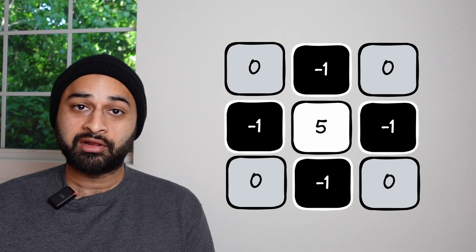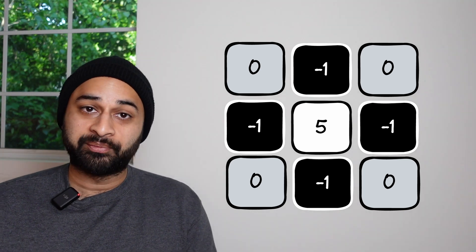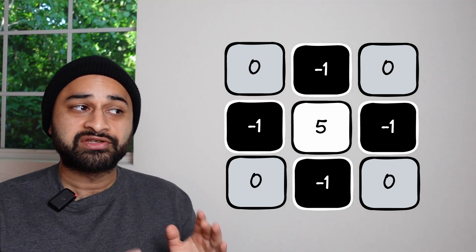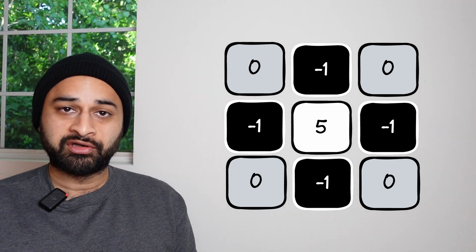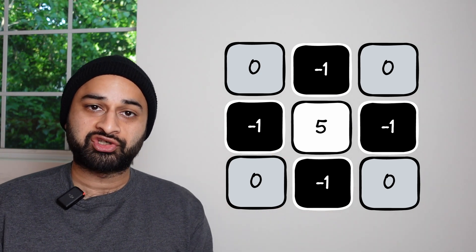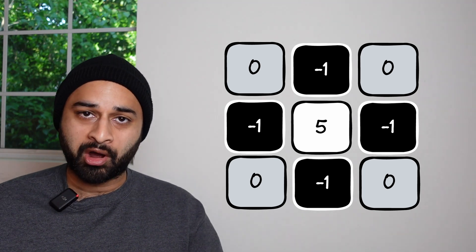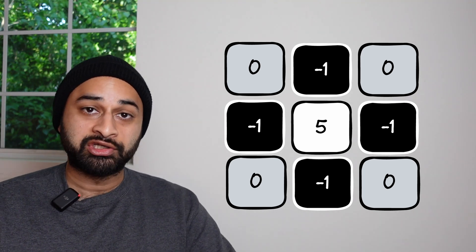Now the big question is: does this actually work? Let's set the sharpening factor to five. If we do that and work out the matrix math, we get our sharpening kernel — and that is the exact matrix you saw in the thumbnail of this video and at the beginning. This is very often used as what's called the unsharp mask, which is what's doing the sharpening. But we can set that sharpening factor to whatever we want — it's not the only sharpening kernel.